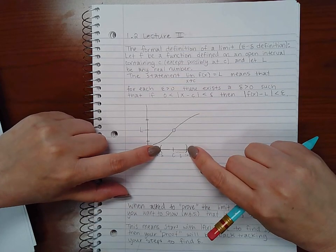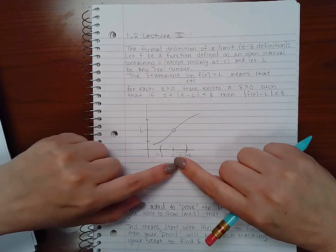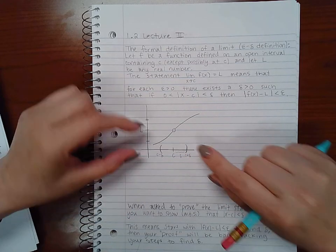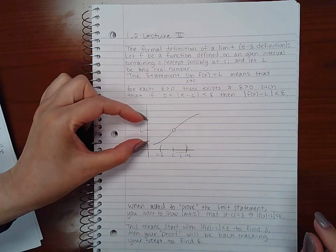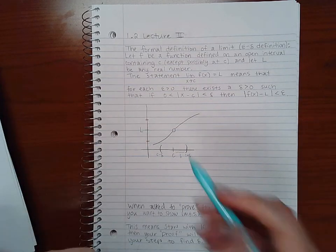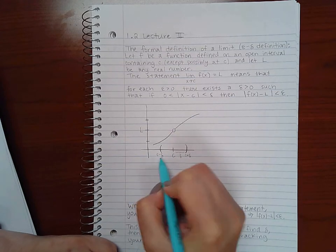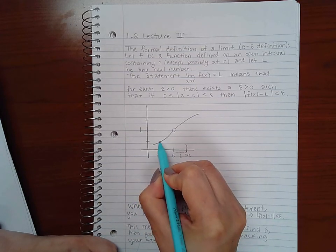What it's saying is if you have this interval here, also known as a neighborhood around C, if you have this interval here, then automatically there's going to exist an interval around L.